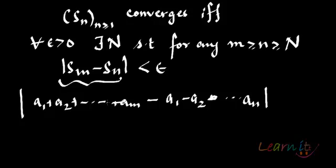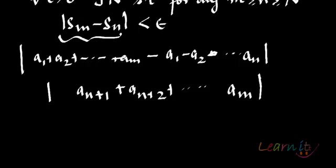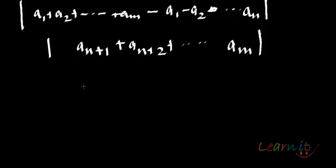Now we are already saying that m, n ≥ N. So here what will you have? All these terms will cancel out. The terms that will remain will be A_{N+1} + A_{N+2} and so on and so forth till A_m. And hence this is less than epsilon.